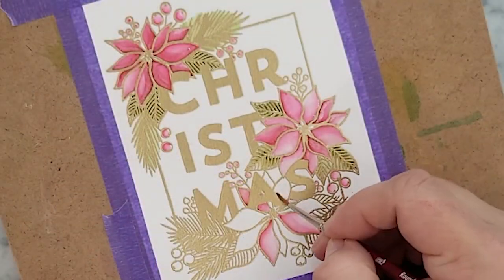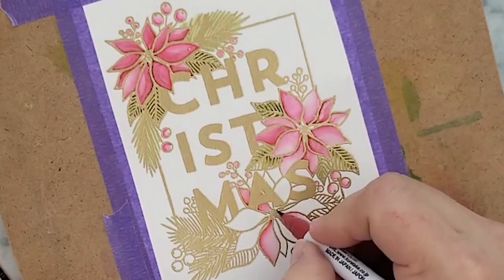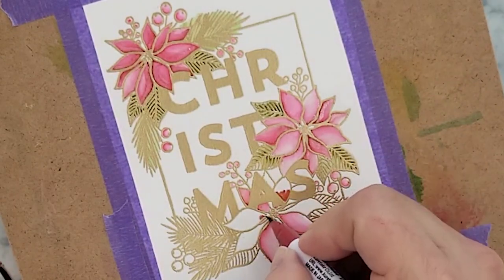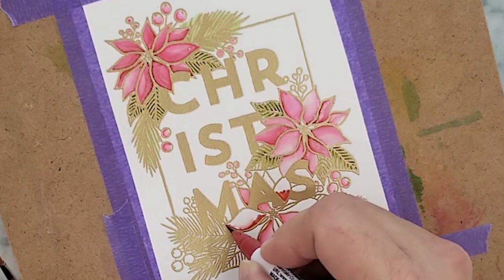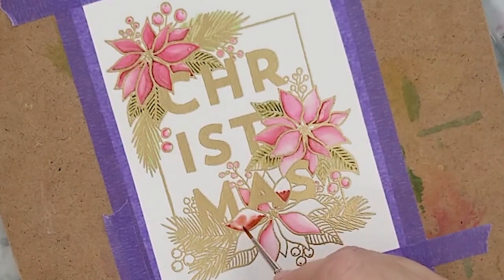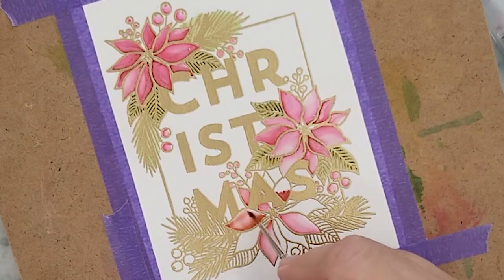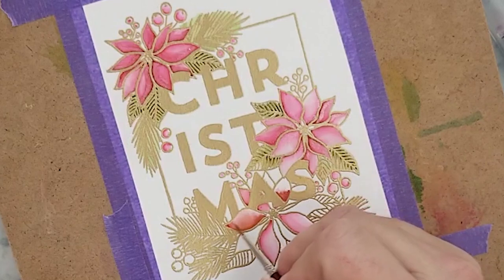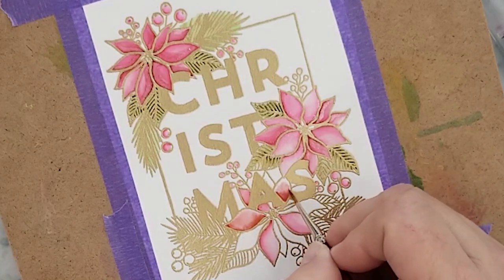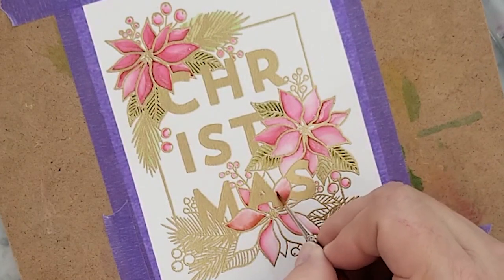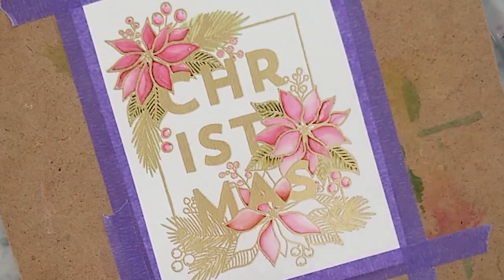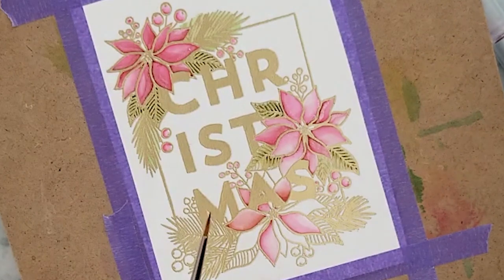I'm zooming in for this next part because I really want you to see how easy this is. I start by filling in a petal with some clean water. Now this is not watercolor paper. It's Bristol smooth, so go light with your water application. I'm using my Zig pens in the color deep red. I lay some ink down, use a small watercolor brush, and just pull that ink around into the water, leaving some areas lighter than other areas.